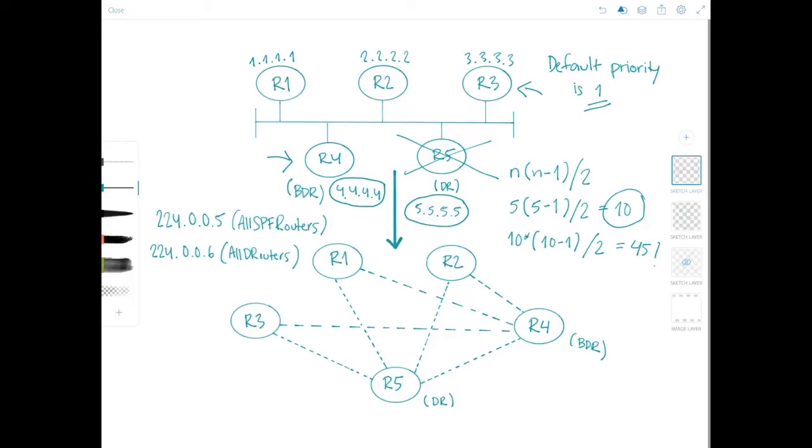And note that if only one eligible router is attached to a multi-access network, that router will become the DR and there will be no BDR. But that's really it about the OSPF designated router and backup designated router. Thank you for watching and I'll see you in the next video.